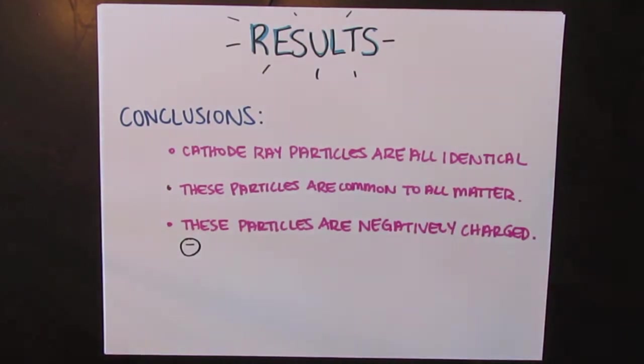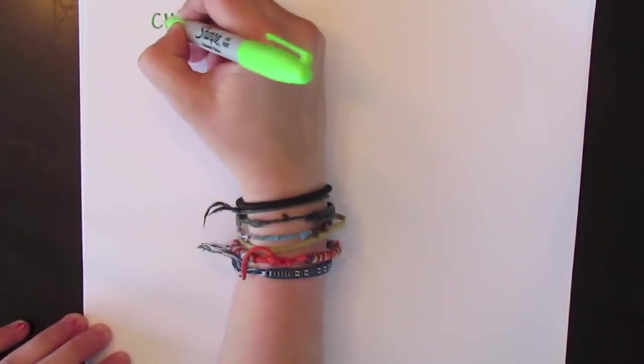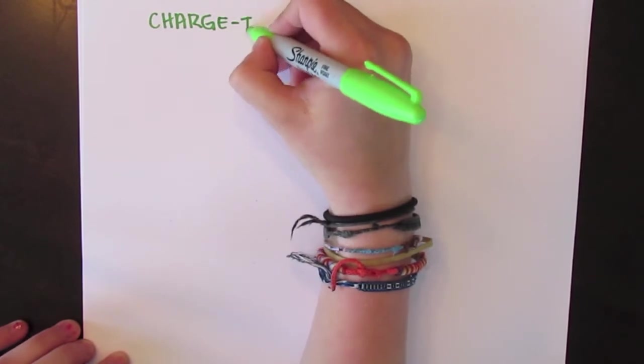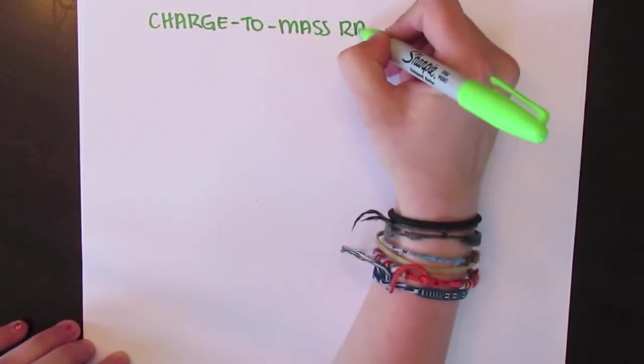With Thomson's experiments, he proved that electrons existed, which were smaller than atoms and negatively charged. The most profound part of Thomson's experiments was his calculation of the charge to mass ratio of the electron.